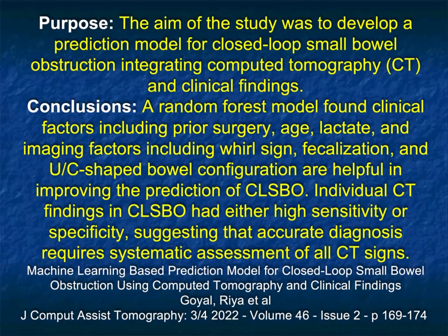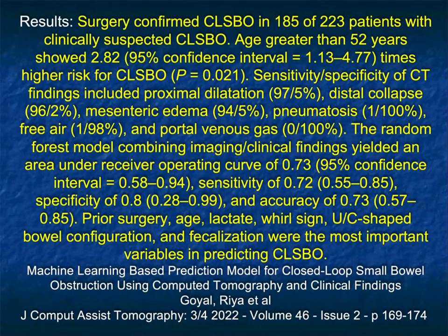If you ask me where things will change in the future, it seems like AI is everywhere. This article talks about a machine learning prediction model for closed-loop bowel obstruction using CT and clinical findings to predict the presence of obstruction and how you should manage the patient. I don't think the whole world is going to be AI everything, but it's an interesting application — though this is a bit stretching the point. If you have a U-shaped configuration, you know it's obstructed and you know surgery is needed, so that alone is not going to be AI — but we'll see what happens.